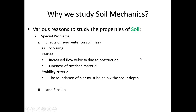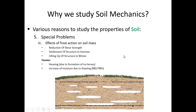There are also spatial problems. The effect of river water on soil mass includes scouring, which is caused by increased flow velocity due to obstruction. The stability criterion is that the foundation of a pier must be below the scour depth. Another special reason is land erosion. The third one is the effect of frost action on soil mass — due to frost action, there is a reduction of shear strength and settlement of structures.